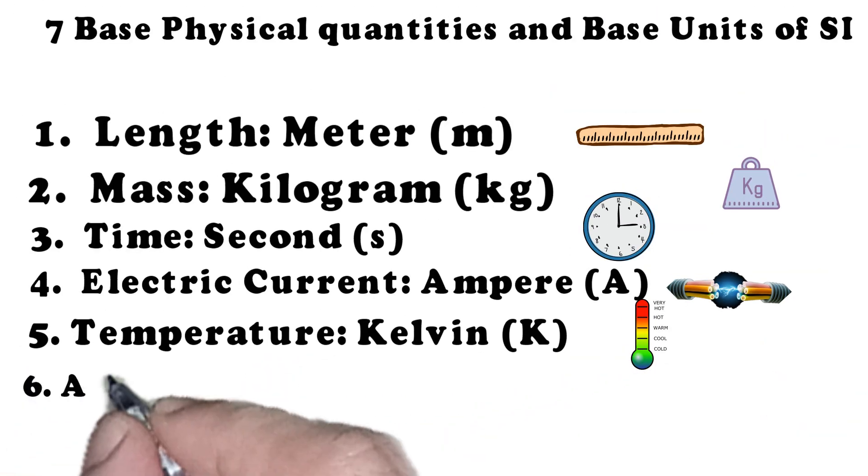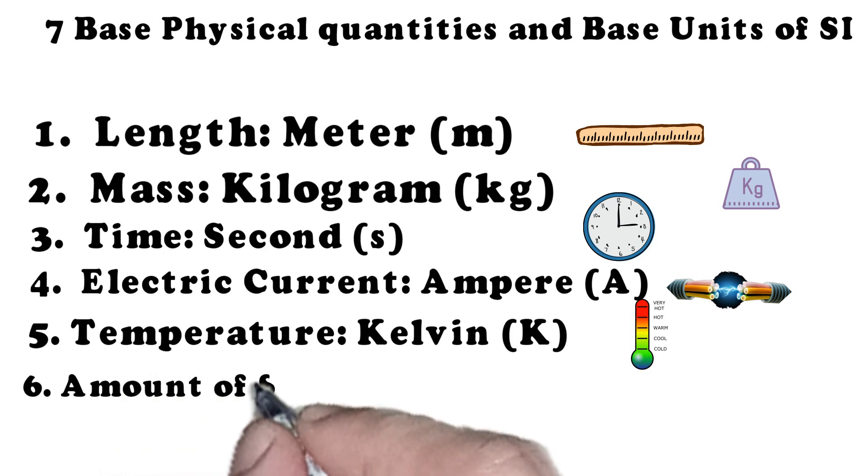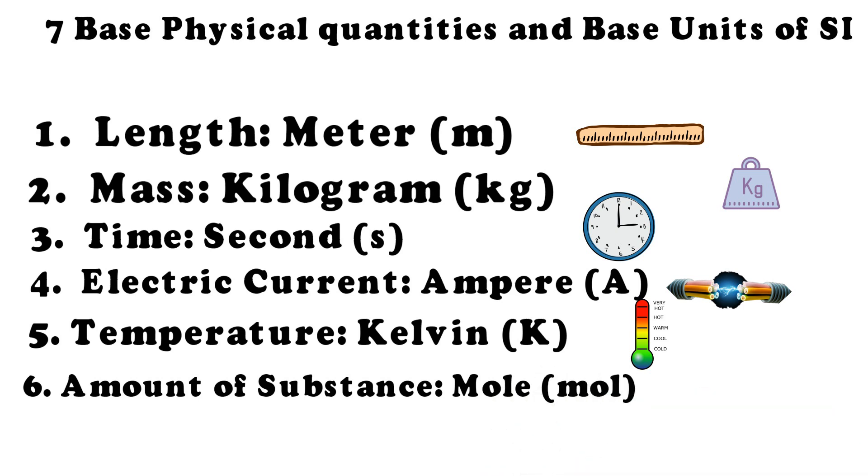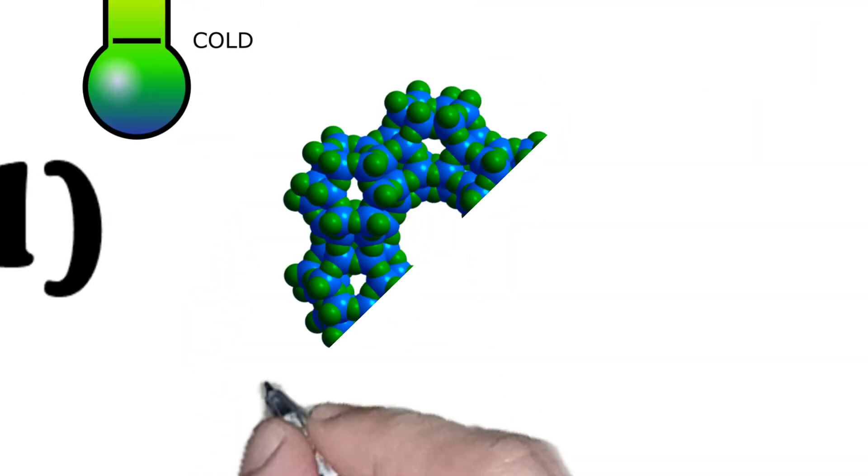Amount of substance - to count particles like atoms or molecules, we use the mole symbolized by mol. It tells us how much of a substance there is.